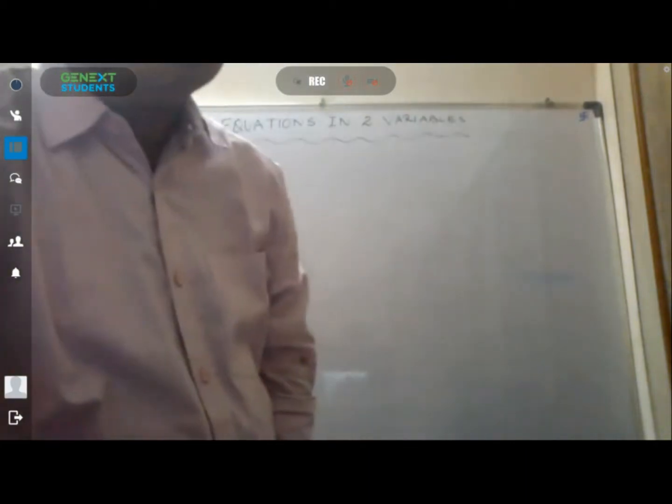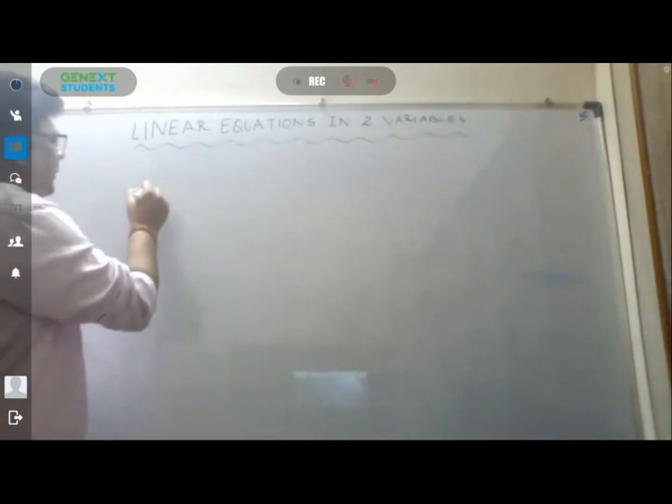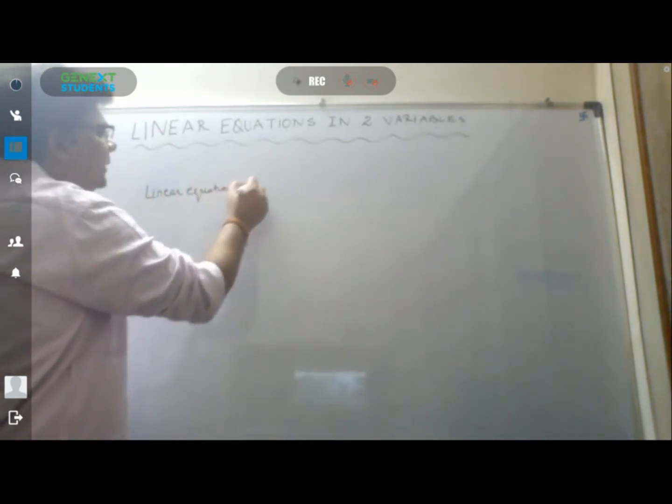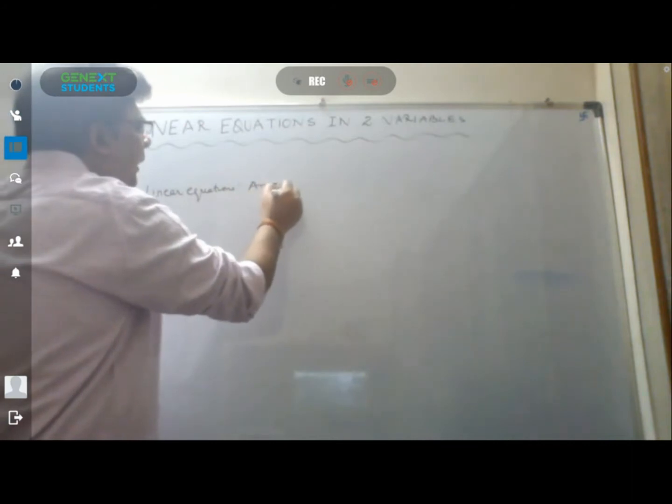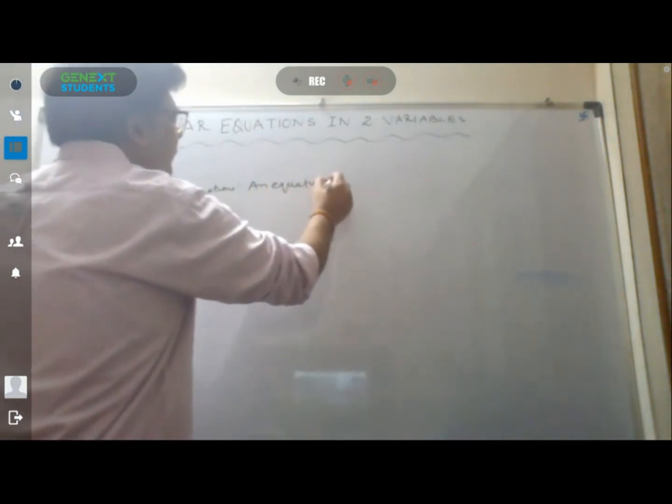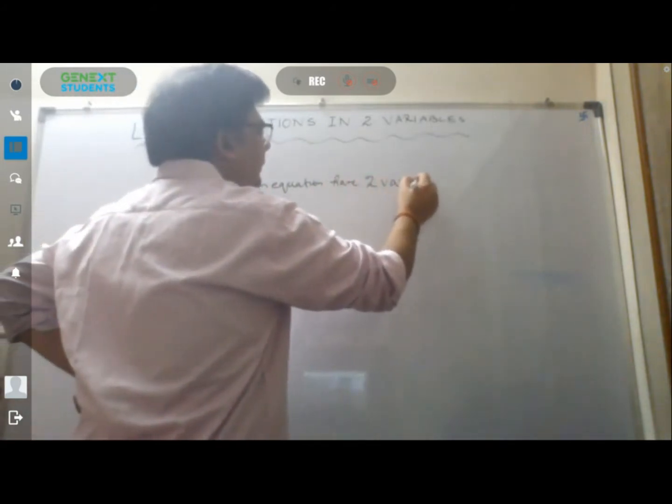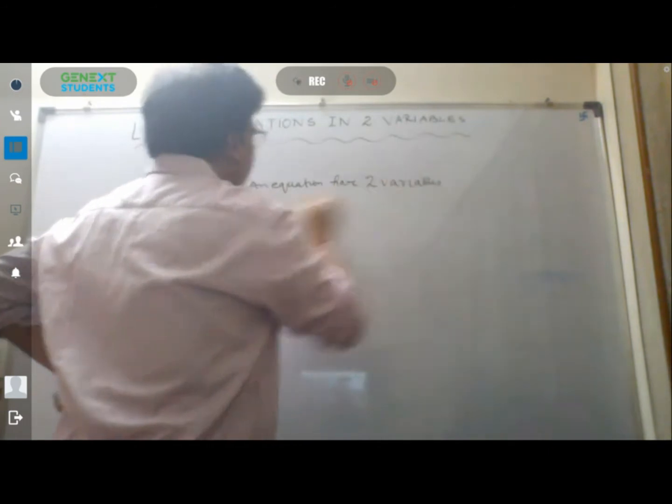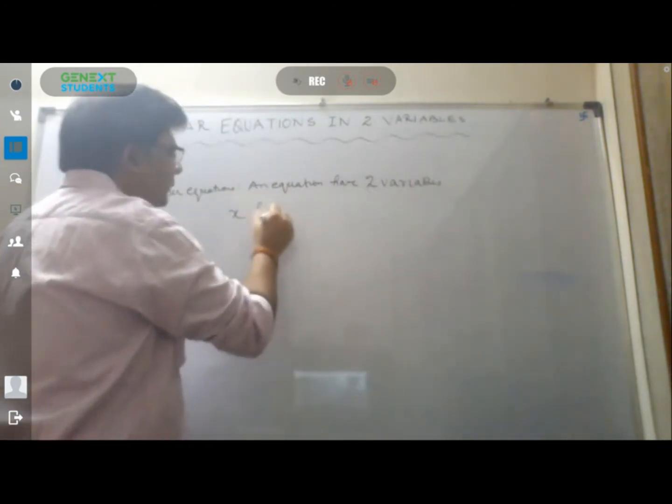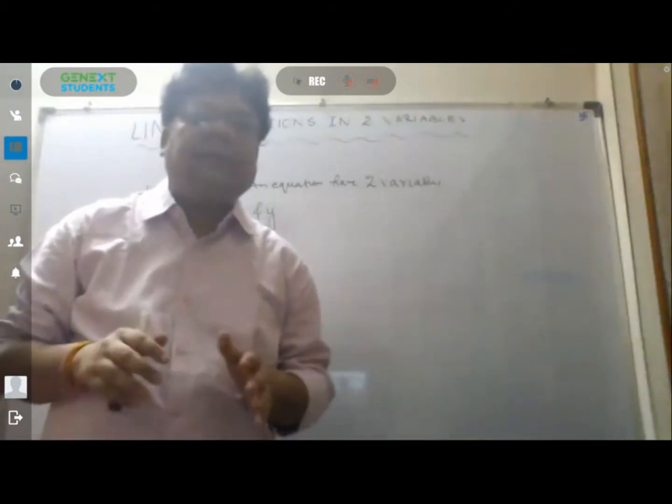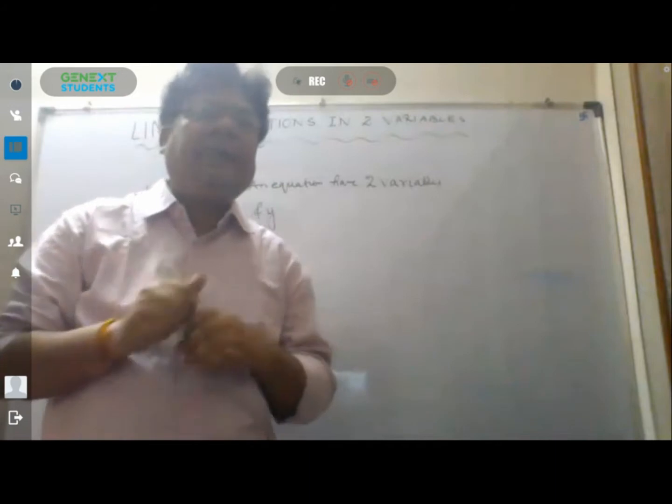What do we mean by linear equations? Linear equations in two variables means an equation having two variables, x and y, such that it forms an equation where a and b are not equal to 0.